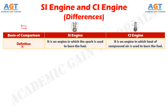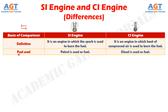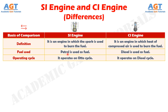Looking at the main differences: in terms of definition, the SI engine uses spark to burn the fuel, whereas the CI engine uses heat of compressed air to burn the fuel. In terms of fuel type, SI engine uses petrol, whereas CI engine uses diesel. In terms of operating cycle, the SI engine operates on the Otto cycle, whereas the CI engine operates on the diesel cycle.